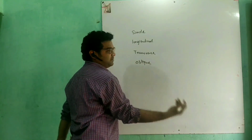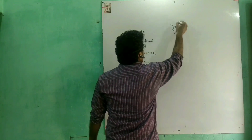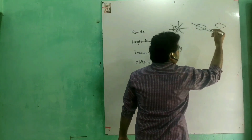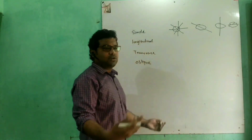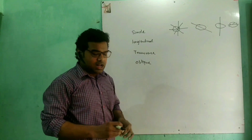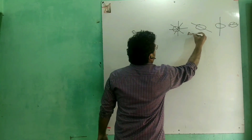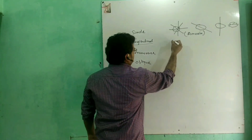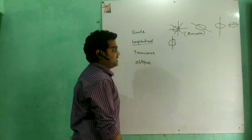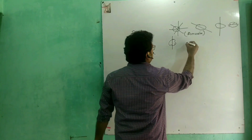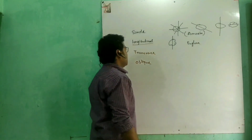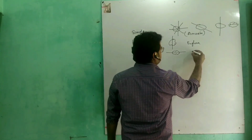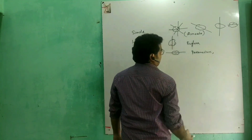In simple or irregular type, the organism can divide in any plane. In longitudinal type, division is along the longitudinal plane. In transverse type, division is along the transverse plane — examples are paramecium and planaria. In oblique type, division is at an oblique angle — an example is Ceratium.